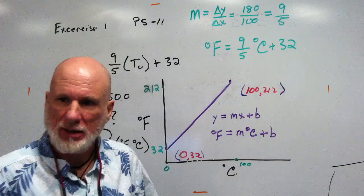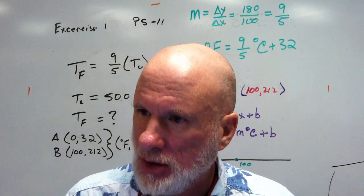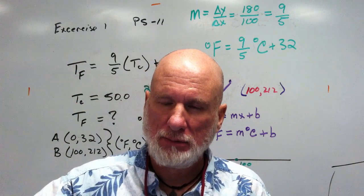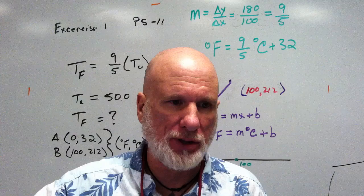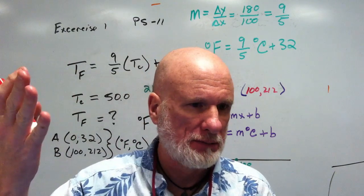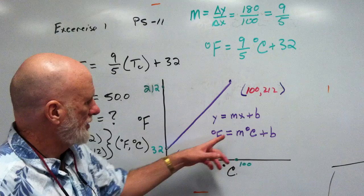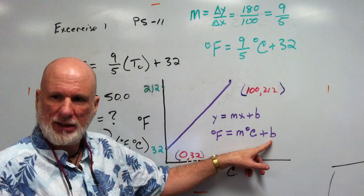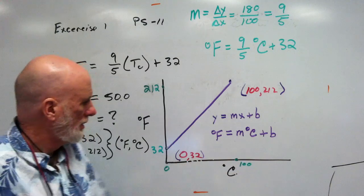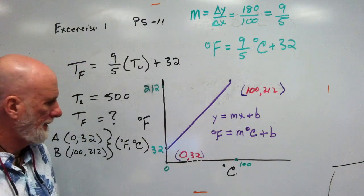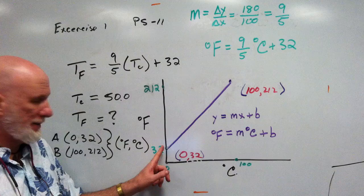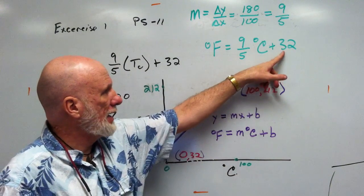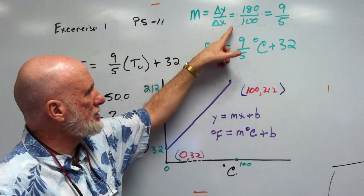Y equals MX plus B. The first thing is easy. You put in degrees Fahrenheit for Y, and you put in degrees Celsius for X. Almost too easy, right? So that's what we got so far. What are you going to put in for B? What's your Y intercept? 32. 32. So you're going to put 32 in for B.